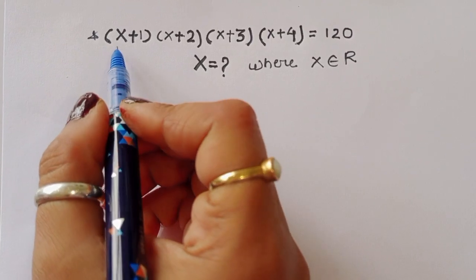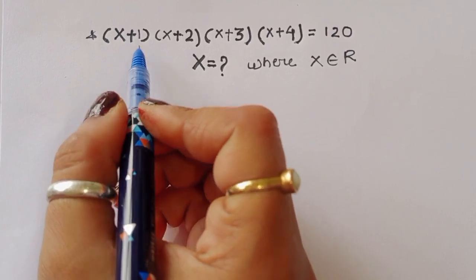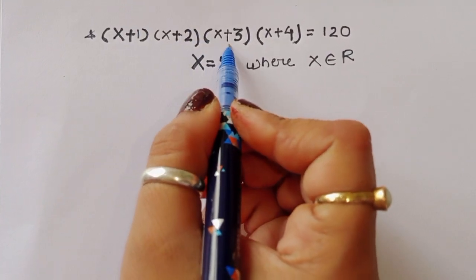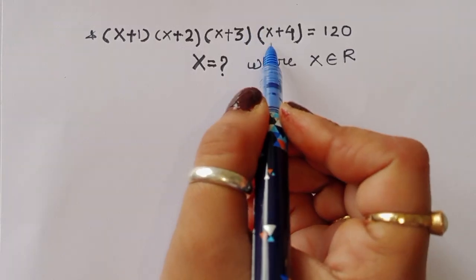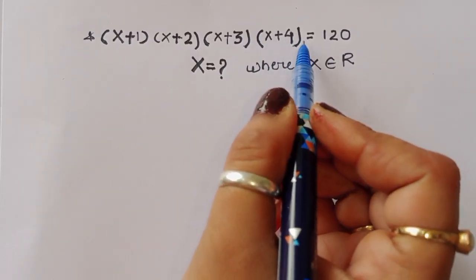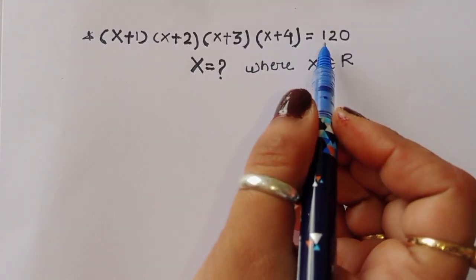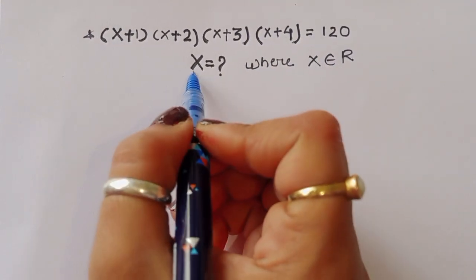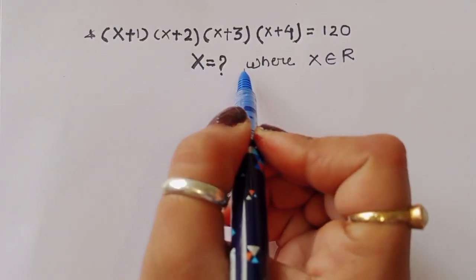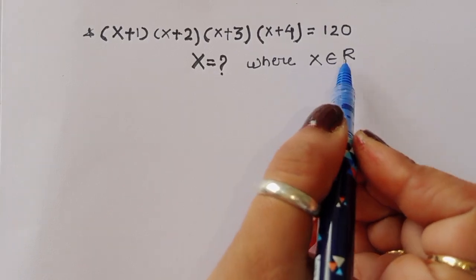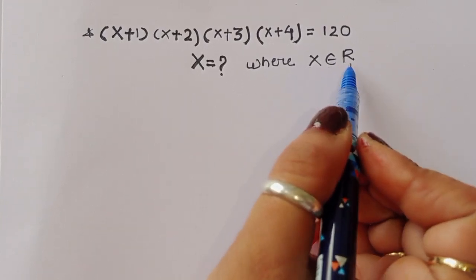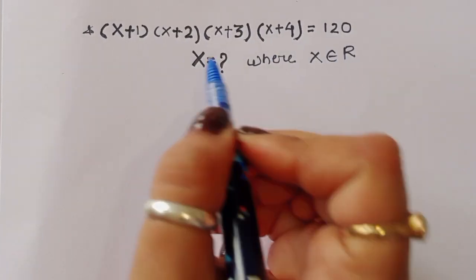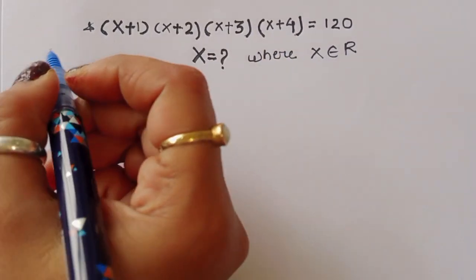The question is given: (x+1)(x+2)(x+3)(x+4) = 120. We have to find the value of x, where x belongs to ℝ. This is the given condition. Now let's see how we can find the value of x.